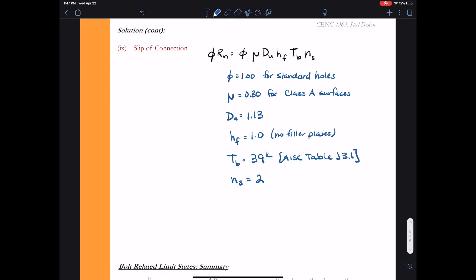Finally, the number of shear planes is 2. You can take a look back at our connection and see that the bolt will be in double shear and we talked about that in the previous example. So going through and multiplying all these together, we get that φRn is going to be 26.4 kips per bolt.